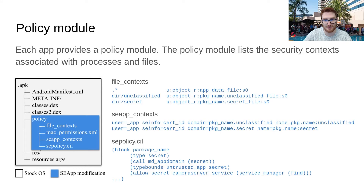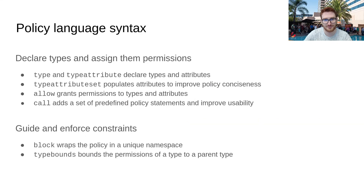How can we specify the policy? For that, we have selected a subset of the common intermediate language. Within this policy dialect, there are two groups of statements: the one we need to declare types and grant permissions, where we have the type, type attribute, type attribute set, allow, and call statements; and the one we use to limit the propagation of permissions, where we have the block and type bounds statements.